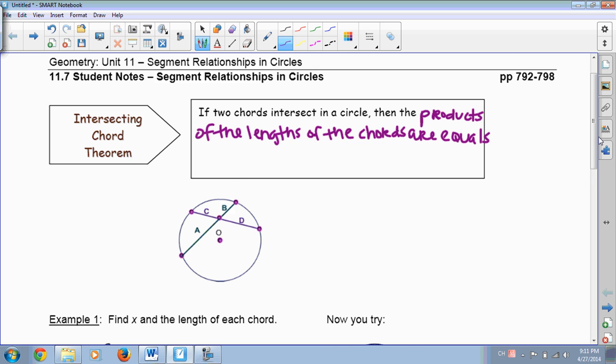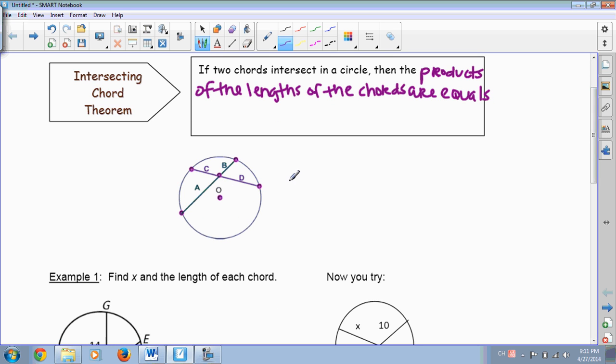So we're multiplying the lengths of both of the segments of the chords together. So, for example, on this, they're saying that if you multiplied A times B, because they're on the same chord, that would be the same thing as or would be equal to C times D.